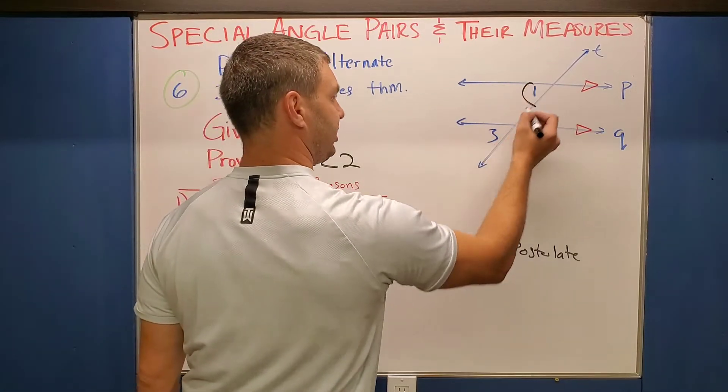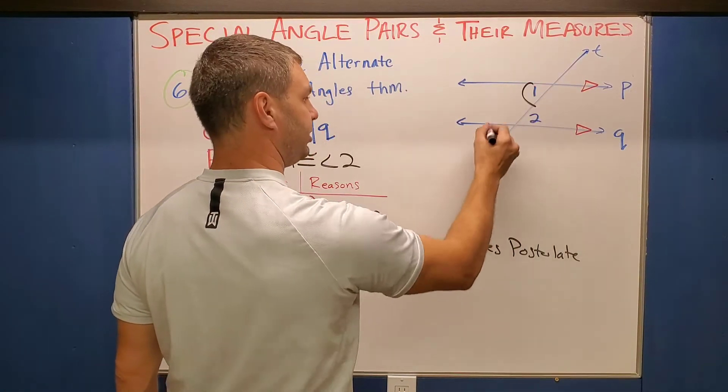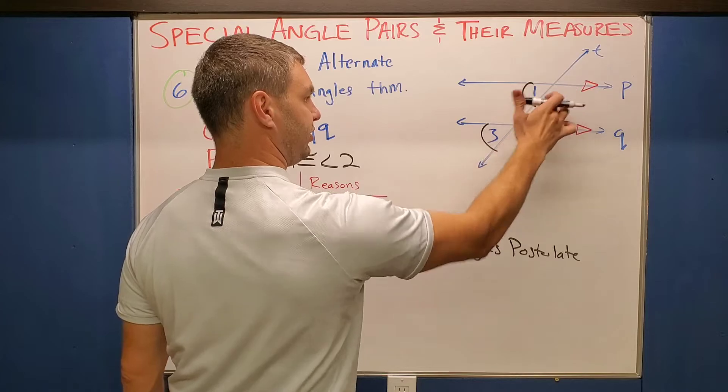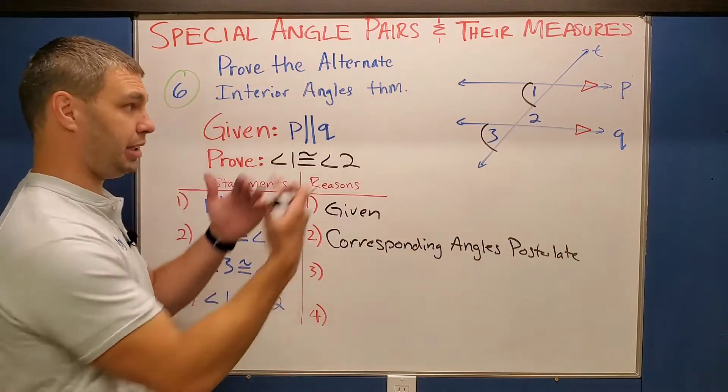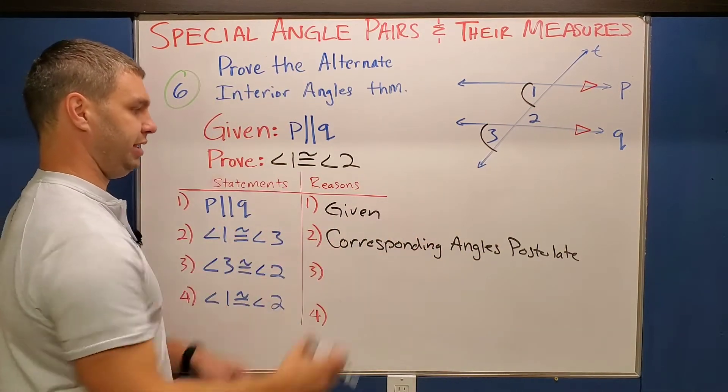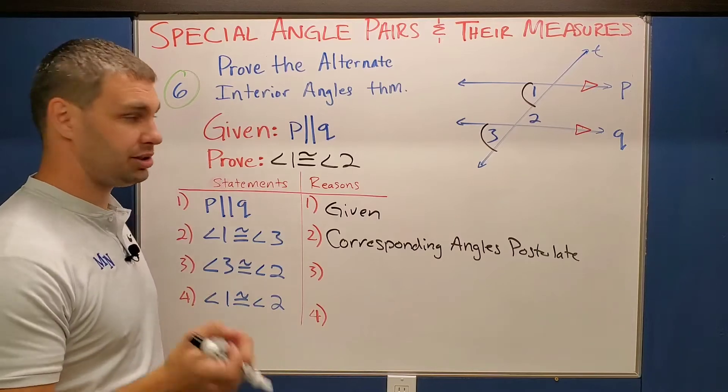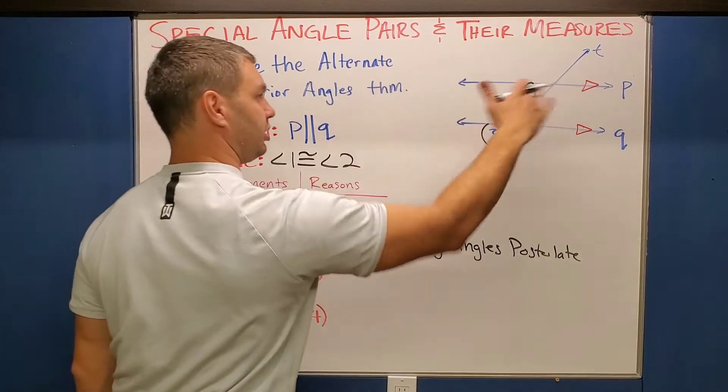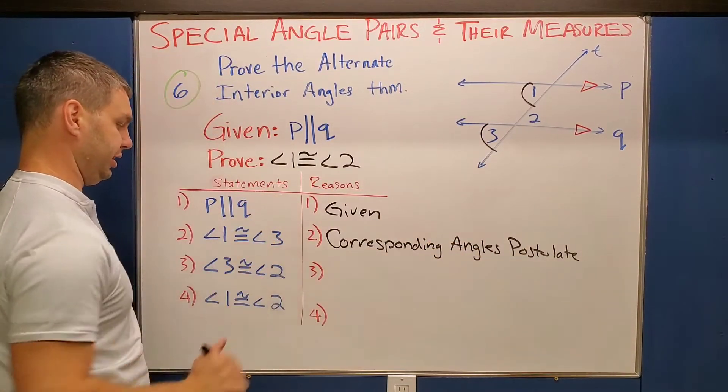Remember, these are in the same position. They're both in the bottom left of each of their respective intersections. So the corresponding angles postulate means that those are going to be congruent, as long as P is parallel to Q, which of course it is.